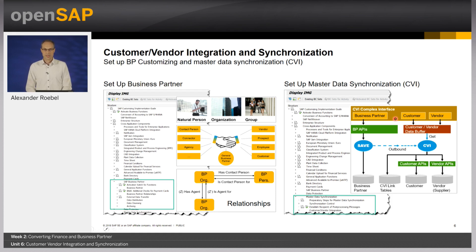I always talk about Business Partner and CVI together, but in fact these are two separate topics, each requiring its own setup and considerations. On the left side of the slide you see the settings and options for setting up the Business Partner in general — for example, number assignments, roles, etc. — and to check and integrate customer and vendor enhancements. On the right side you see the main settings required for mapping customers and vendors to Business Partners and vice versa. In addition, you should activate a certain business function in SAP ERP to consider contact persons, and you must activate the PPO. These areas are relevant for both the S/4 conversion and the greenfield approach.